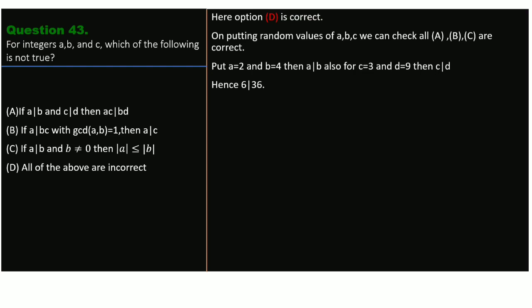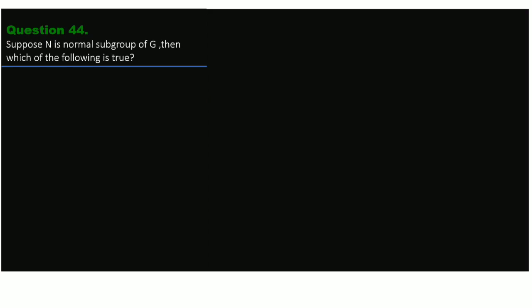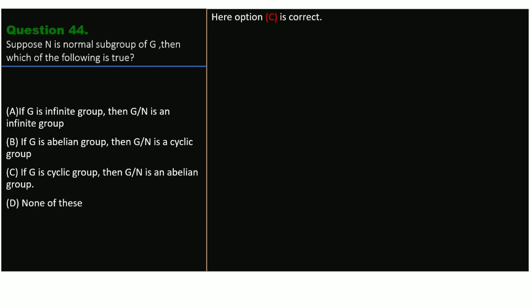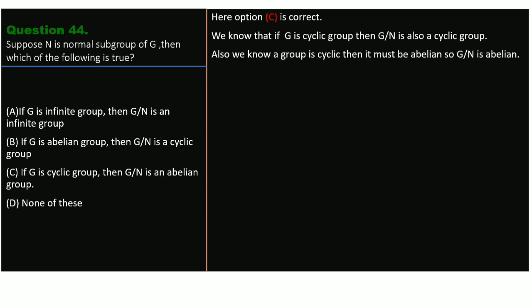Question 44. Suppose N is a normal subgroup of G. Which of the following is true? A) if G is infinite then G/N is infinite; B) if G is abelian then G/N is cyclic; C) if G is cyclic then G/N is abelian. Option C is correct, because if G is cyclic then G/N is also cyclic, and every cyclic group is abelian. So the conclusion is: if G is cyclic then G/N is an abelian group.